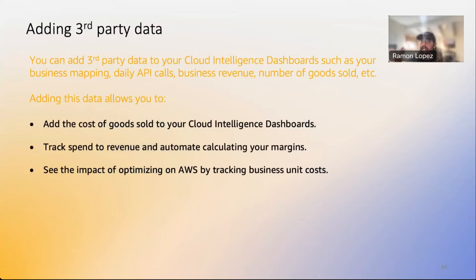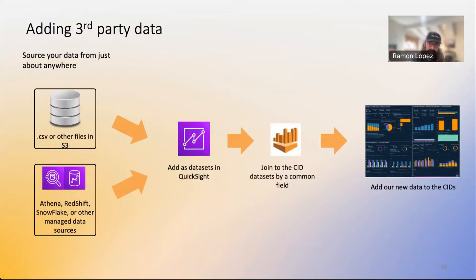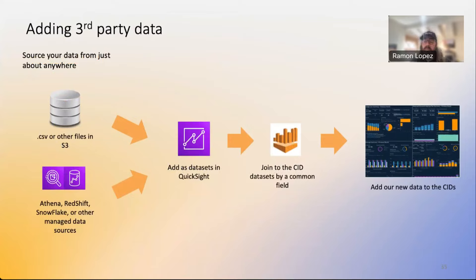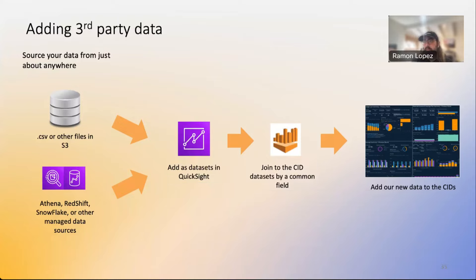The most powerful customization is bringing in your own data — categorizing costs and infusing the data with your own chart of accounts, budgets, and internal goals mapped to your organization. Every organization tracks things differently, so this is critical for large organizations. With QuickSight and CUDOS, you can have your data in CSV or other databases and S3 buckets, combine it with existing CUDOS data, and ultimately create new datasets and new visualizations on top. I find myself helping customers with this a lot, and there's a lot of value in it.